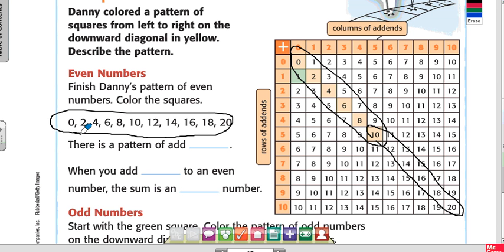So there is a pattern of adding how many each time? Two. So when you add two to an even number, the sum is an even number.